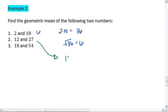For 12 and 27, multiply 12 times 27. We get 324. Take the square root of 324. We get 18. So the geometric mean of 12 and 27 is 18.